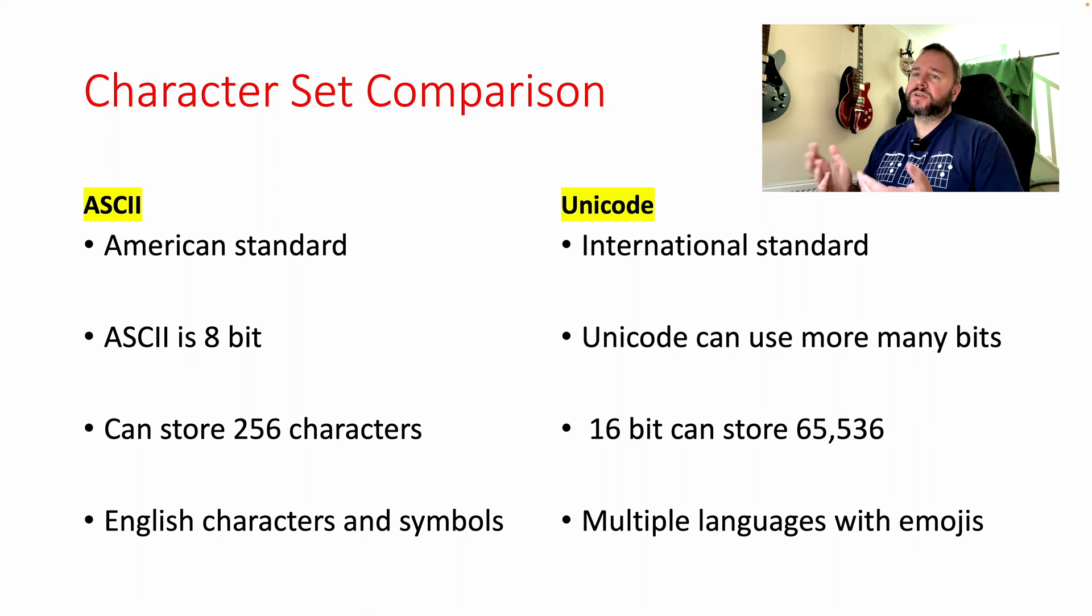Here's a comparison between the two. ASCII is an American Standard. It stands for American Standard Code of Information Interchange. And Unicode is used internationally. ASCII uses 8 bits to store its character set. Whereas Unicode uses substantially more than that. The maximum number of characters available in ASCII are 256. In Unicode, it's substantially more than that. ASCII stores English characters, numbers, and some symbols. Unicode stores all of that. But in addition, also stores characters from different languages and other symbols, such as emojis.